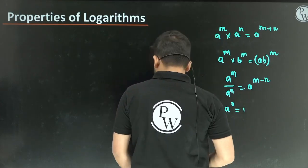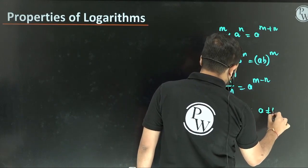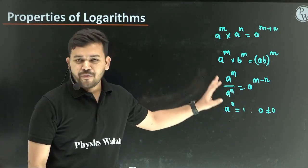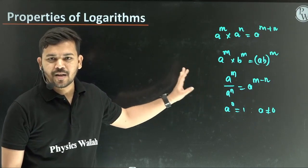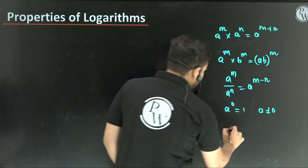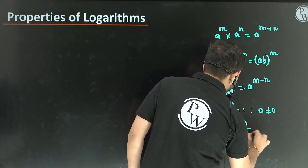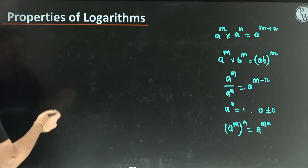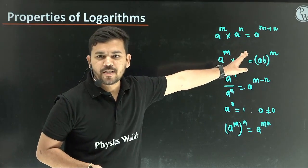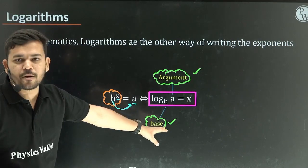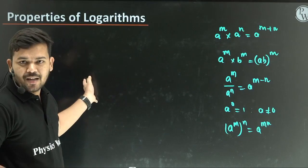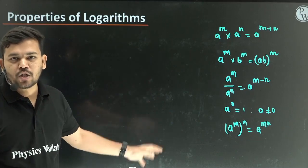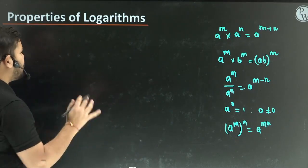And A to the power of 1 equals A. Also, A should not be equal to 0 or infinity. And A to the power of M whole to the power of N equals A to the power of M into N. So these are the exponent properties — more than enough to crack the problems.